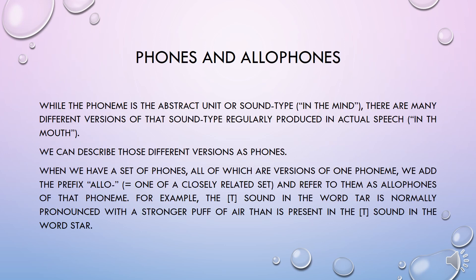While the phoneme is the abstract unit of a sound type existing in the mind, there are many different versions of that sound type regularly produced in actual speech. We can describe those different versions as phones. Phones are phonetic units and appear in square brackets. When we have a set of phones all of which are versions of one phoneme, we add the prefix 'allo-' — meaning 'one of a closely related set' — and refer to them as allophones of that phoneme.